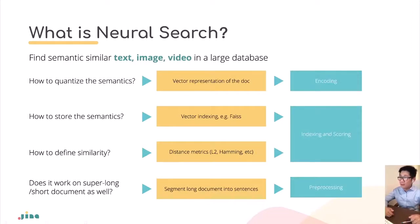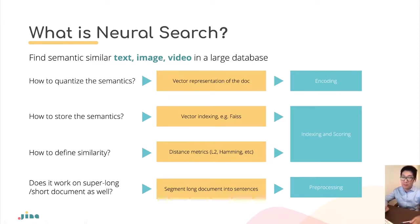Combining all three modalities, to solve a neural search problem one must go through several steps: the encoding step to represent documents into vectors, the indexing step to store and retrieve vectors efficiently, the scoring step to compare two vectors, and the preprocessing step to select the correct size for vector representation.